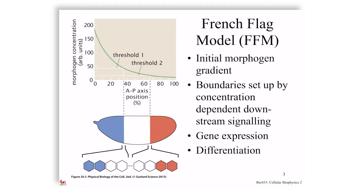For that, we'll call up a conceptual model initially proposed by Lewis Wolpert, who has just recently passed away, called the French Flag Model — the FFM. The idea is the following: there is an initial morphogen gradient — that's the green line — which leads to boundaries being set up due to concentration differences. These concentration differences result in downstream signaling at thresholds T1 and T2, leading to gene expression and differentiation.